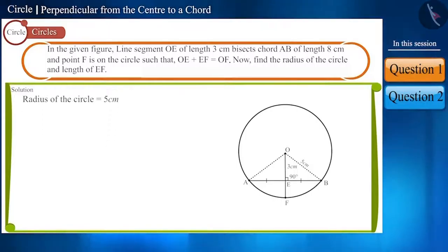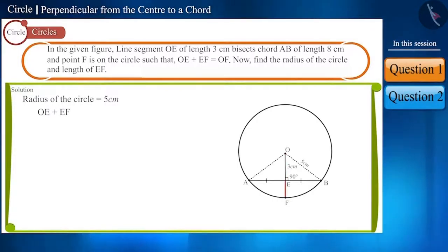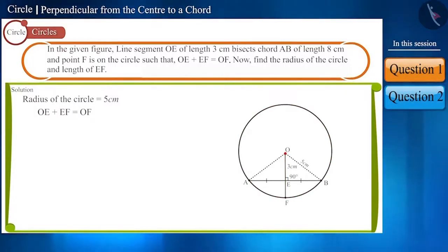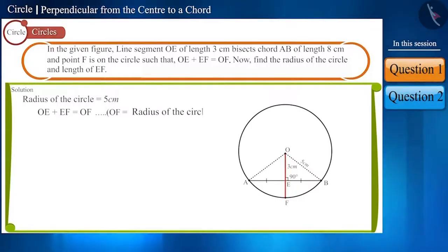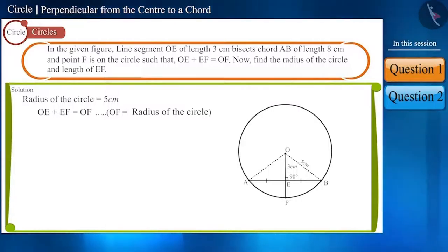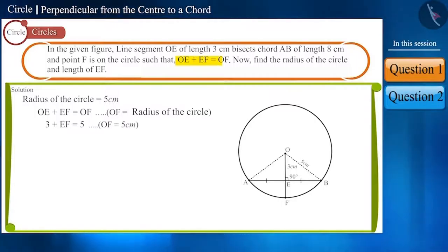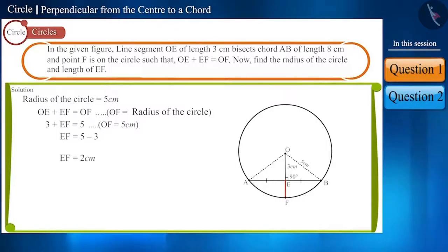Now we have to find the length of EF. Given that point F is on the circle, such that joining OE and EF gives OF. We know that a line segment from the center of the circle to any point on the circle is the radius. Hence, OF is the radius, which is also 5 cm. By putting the values of OE and OF, we can find EF. In this way, we found EF to be 2 cm.